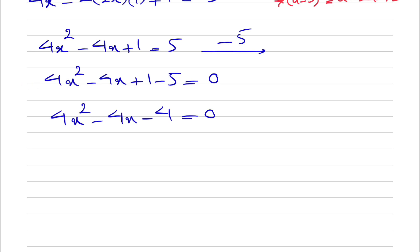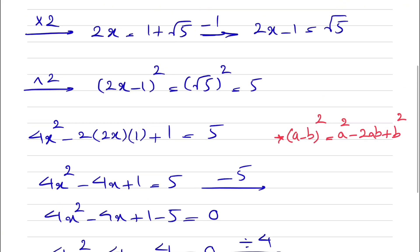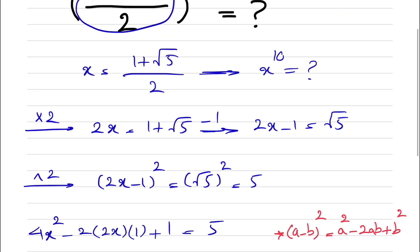We divide everything by 4 to get x² − x − 1 = 0. Adding x + 1 to each side gives us the key identity: x² = x + 1. Remember, we are ultimately interested in x to the power of 10, and we've now established x².